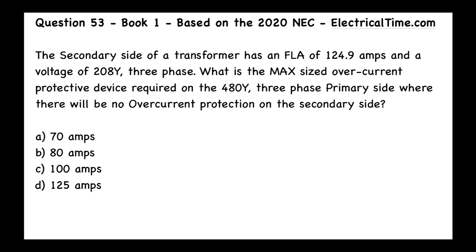This is question number 53 from book number one, based on the 2020 NEC from electricaltime.com. The secondary side of a transformer has a full load amps (FLA) of 124.9 amps and a voltage of 208V Y three-phase. What is the max sized overcurrent protective device required on the 480V Y three-phase primary side where there will be no overcurrent protection on the secondary side? Choices are 70A, 80A, 100A, and 125A.